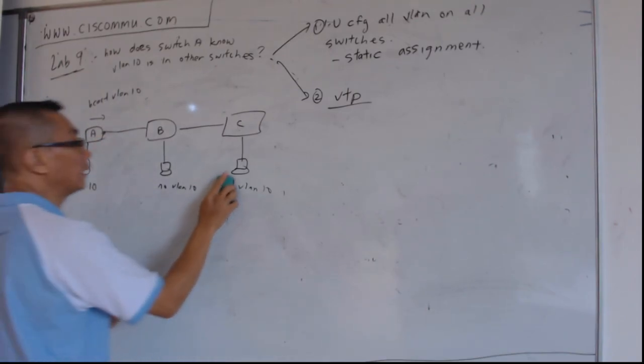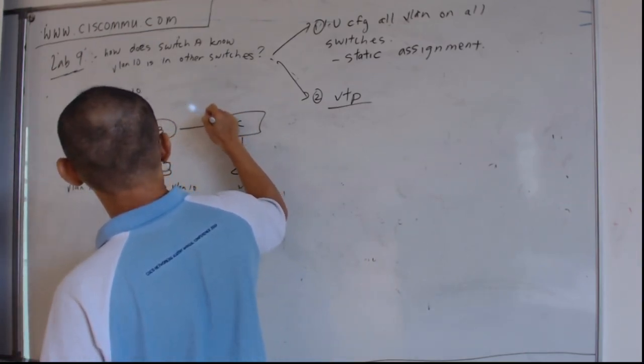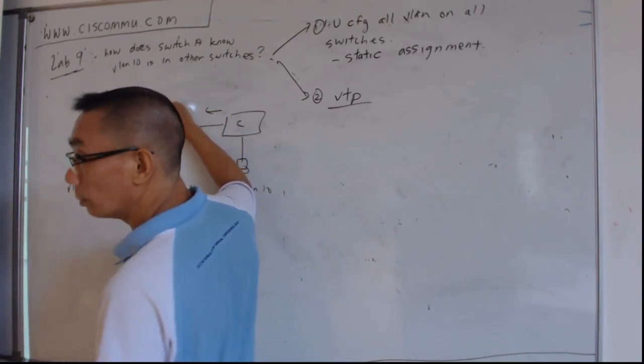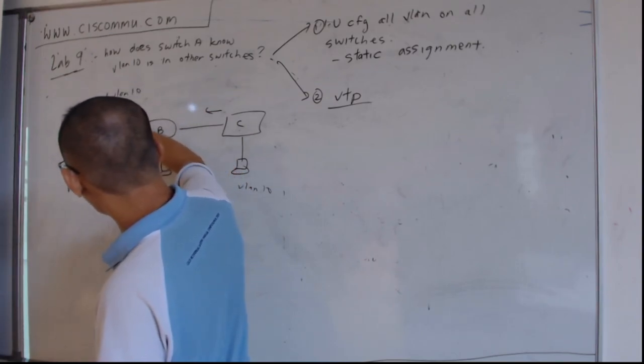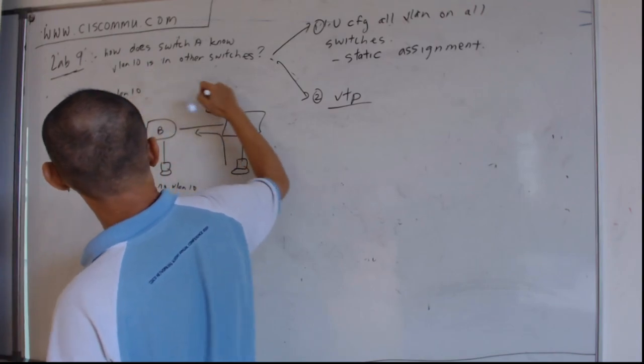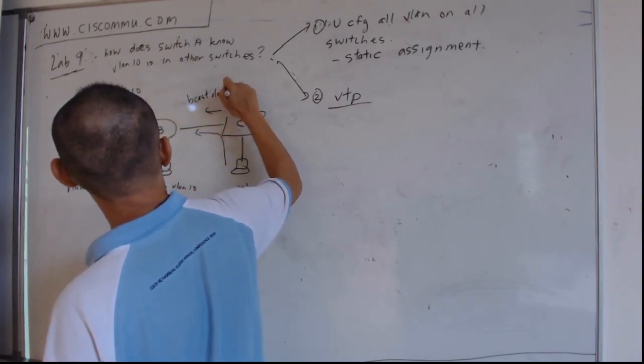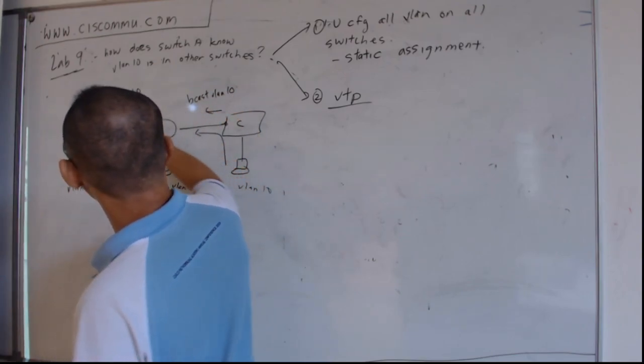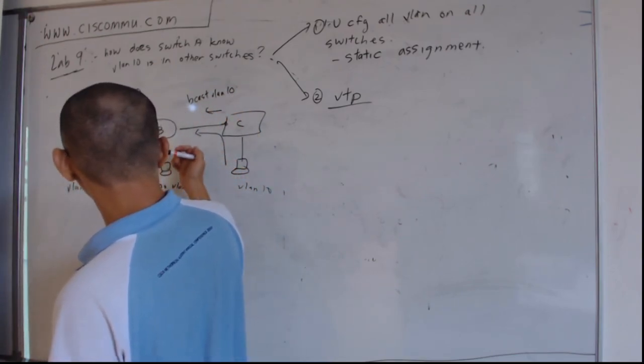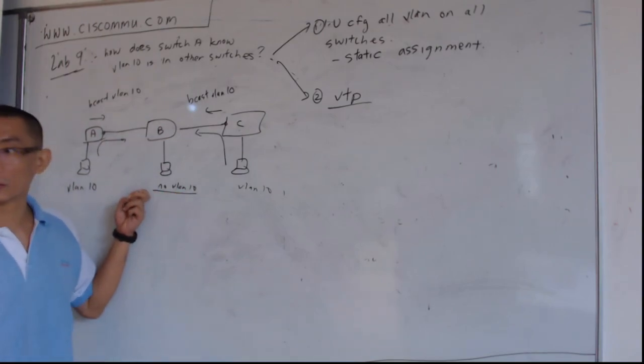If you have a VLAN 10 here and there's a VLAN 10 here, all these switches will inform each other and will let switch B know. So then, the traffic will go forward. The broadcast of VLAN 10 will be enabled over here and over here. So that switch B, VLAN 10 can receive the broadcast.